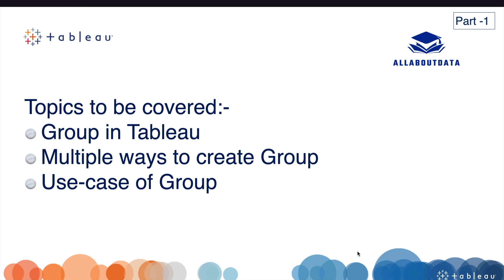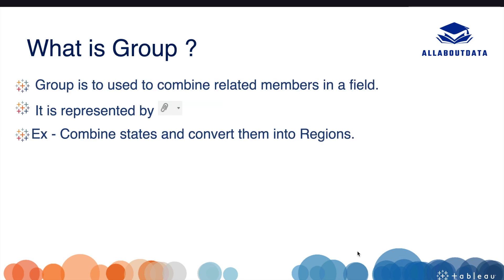So what is a group? A group is used to combine related members in a field. It is represented by a clip symbol. For example, suppose we have states in our data set and we want to convert them into regions. We can create a group for east, west, north, and south and use them as a group.